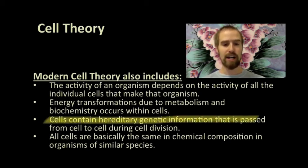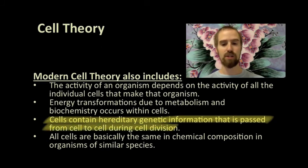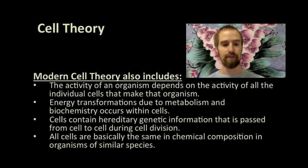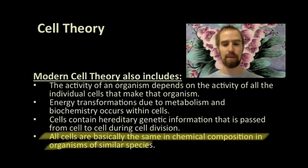Cells contain hereditary genetic information that is passed from cell to cell during division. This refers to DNA, the universal genetic code of life. And in organisms of similar species, all cells are basically the same in their chemical composition. This means that humans have cells that are chemically similar to other humans, and that pine trees have cells that are chemically similar to other pine trees.